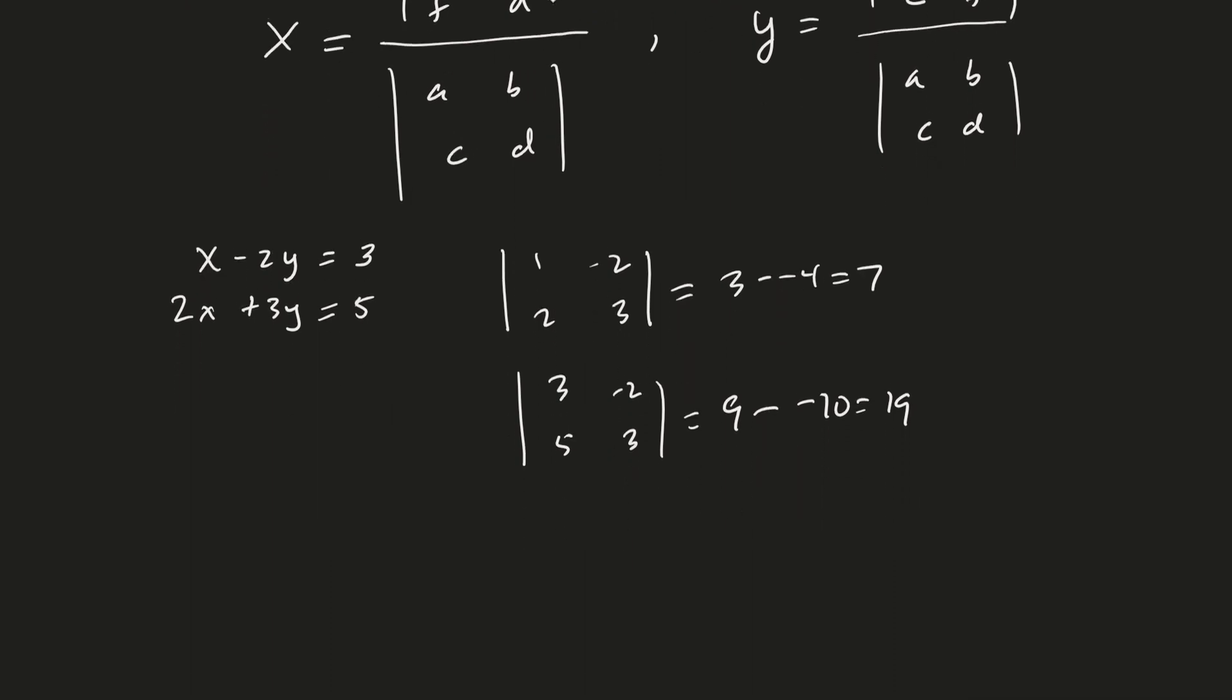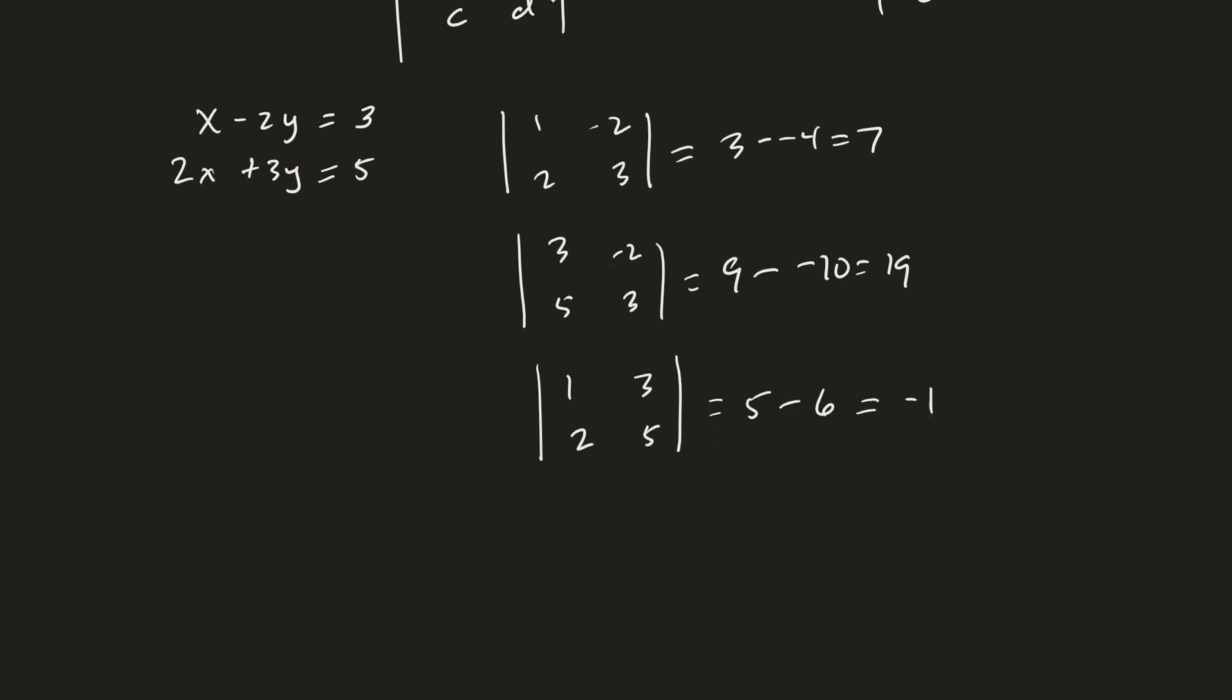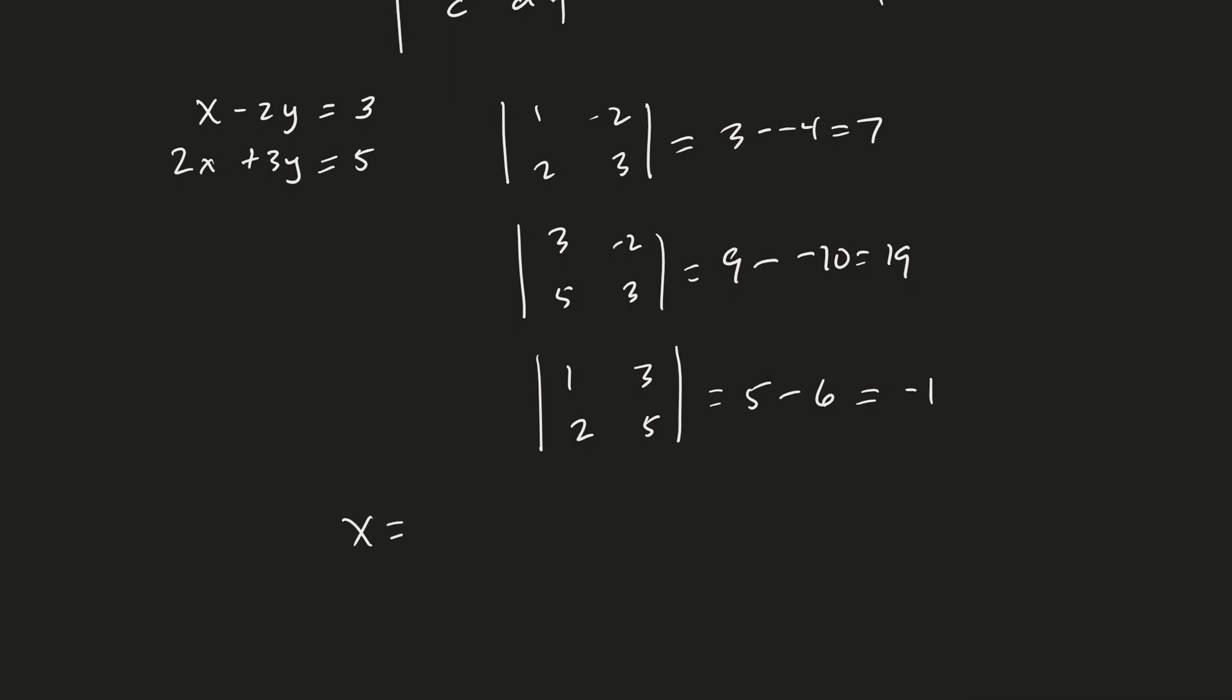And then what's the other column, or what's the other numerator going to be? That's 1, 2, keep that column the same, and then put the 3, 5 in the other position. So that's going to be 5 minus 3 times 2 is 6. Is that a negative 1? Therefore, X is equal to 19 over 7, Y is equal to minus 1 over 7. Done. Nice.